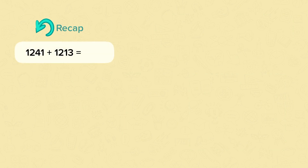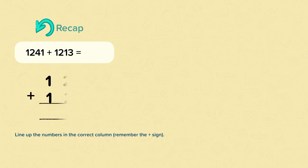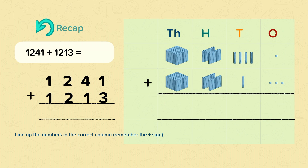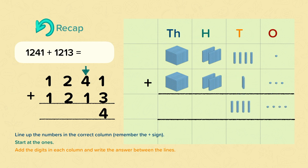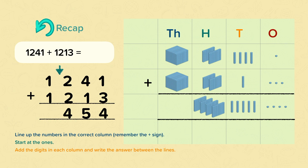Let's look at this calculation: 1,241 add 1,213. The first thing we need to do is line up the numbers in the correct column and then remember to include the add sign. We'll use pictures to help us. Starting at the ones column, we add the digits in each column and write the answer between the lines. 1 add 3 is 4. 4 add 1 is 5. 2 add 2 is 4. 1 add 1 is 2. So our answer is 2,454.